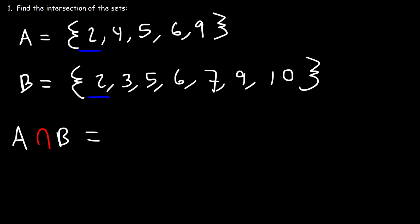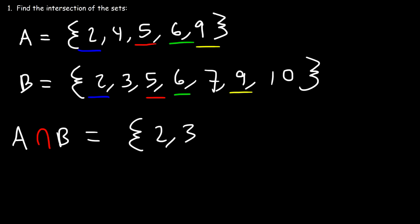Both sets contain 2, 5, 6, and also 9. So therefore, the intersection of sets A and B is 2, 5, 6, and 9. And that's it. So, that's how you can find the intersection of two sets.